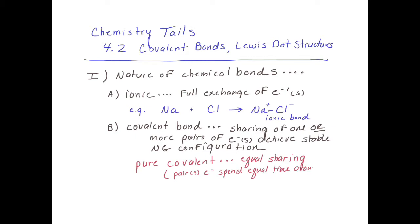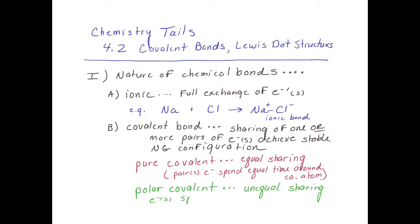Electrons are constantly moving throughout the orbitals. In a pure covalent bond, the pair of electrons spends the same amount of time around each atom. In a polar covalent bond, that is unequal sharing — one of the atoms is better at attracting the electron to itself, and thus the pair of electrons spends more time around one atom and less time around the other. We can predict if a covalent bond is going to be pure or polar, and we can predict if a bond is going to be ionic or covalent by looking at a new property named electronegativity.